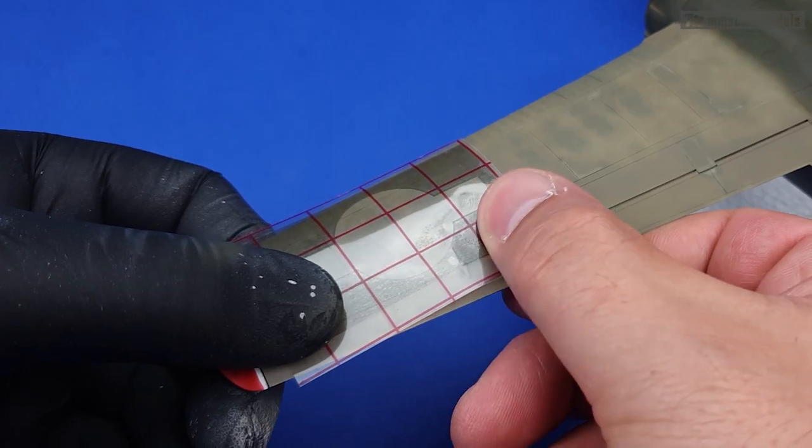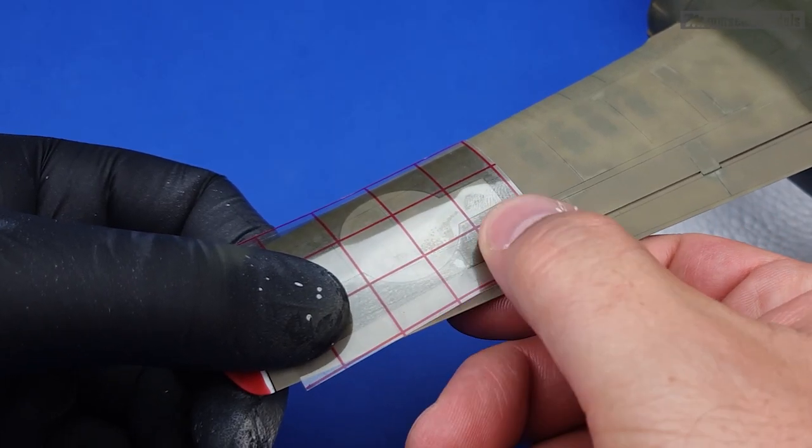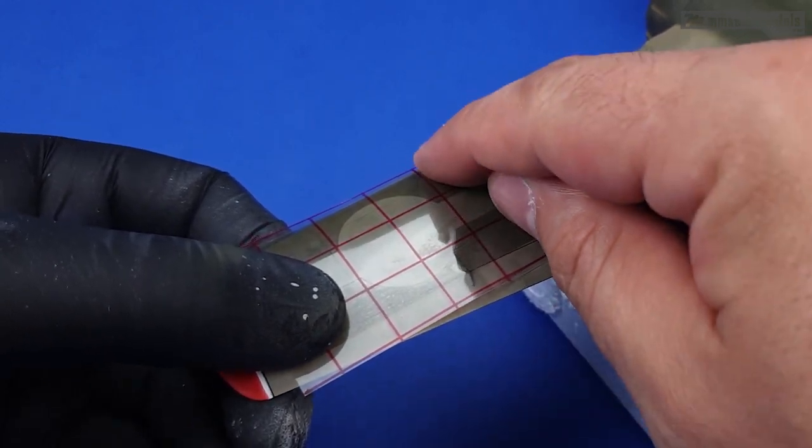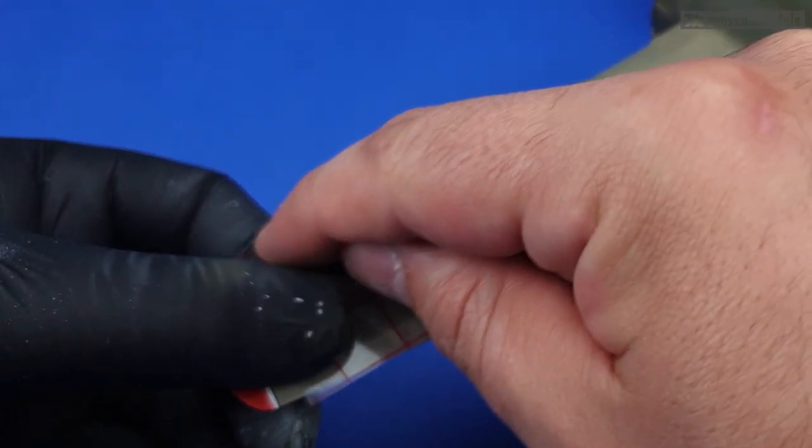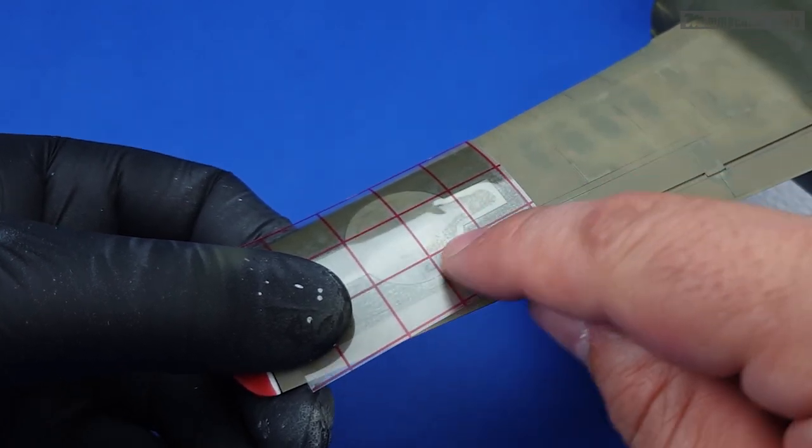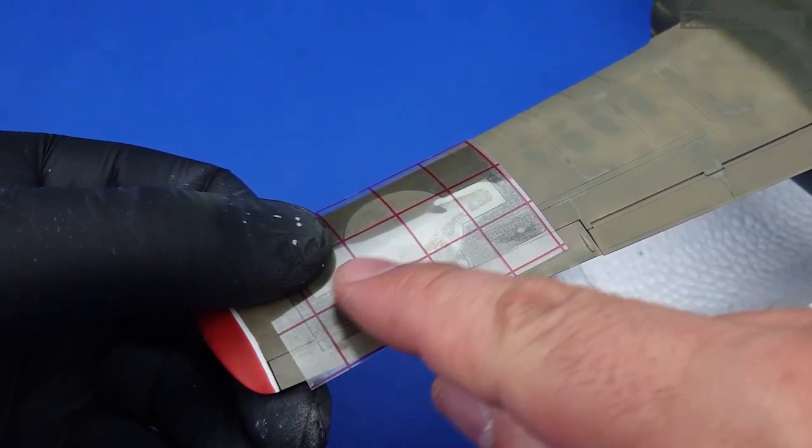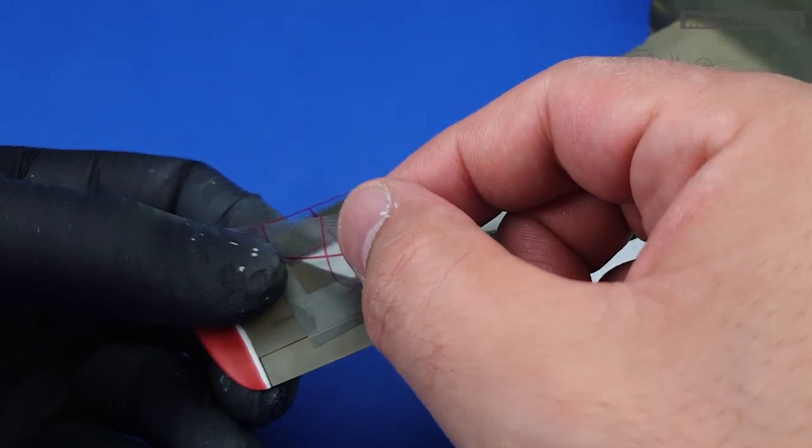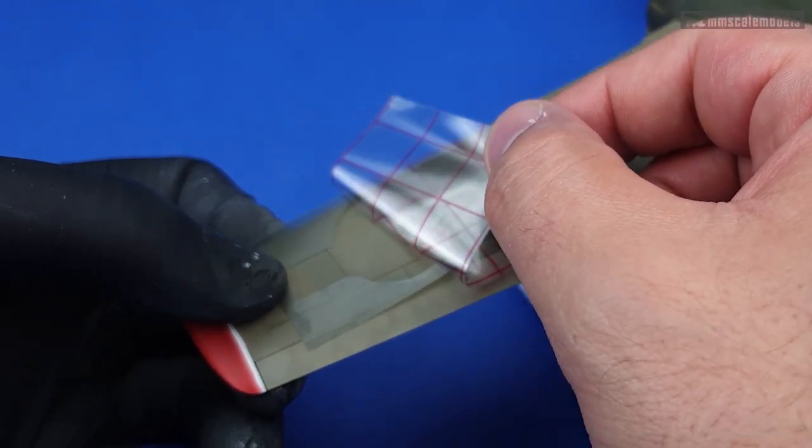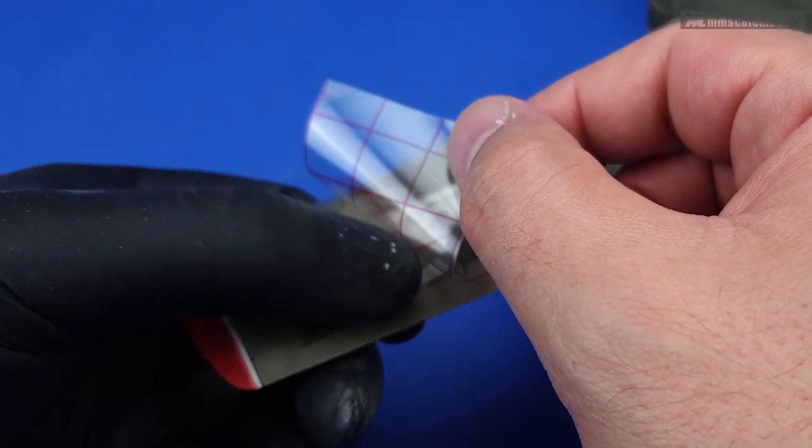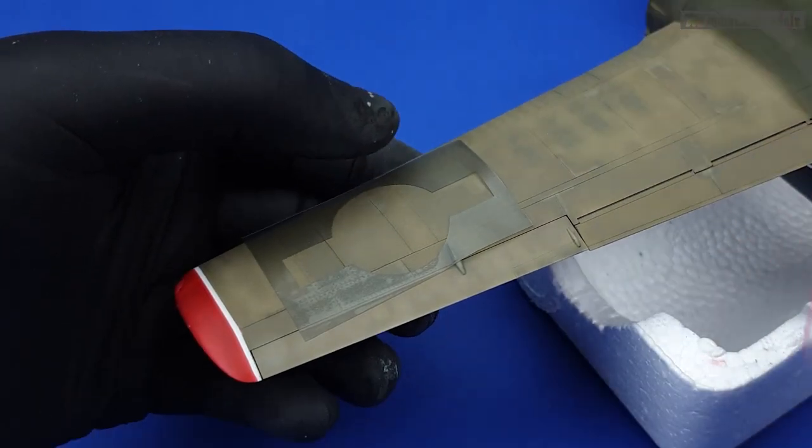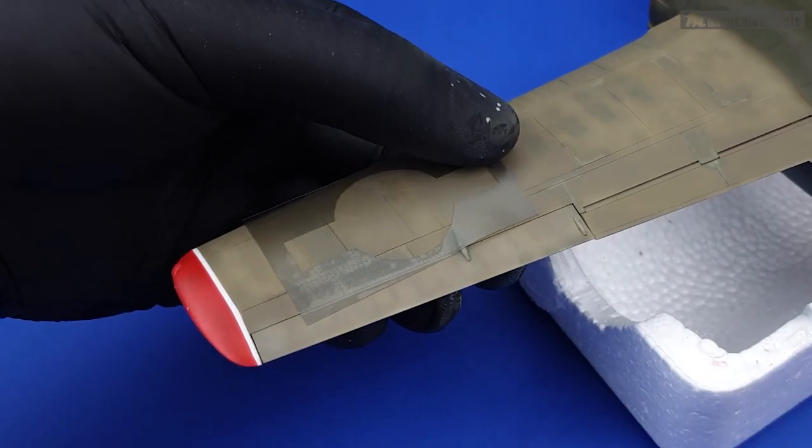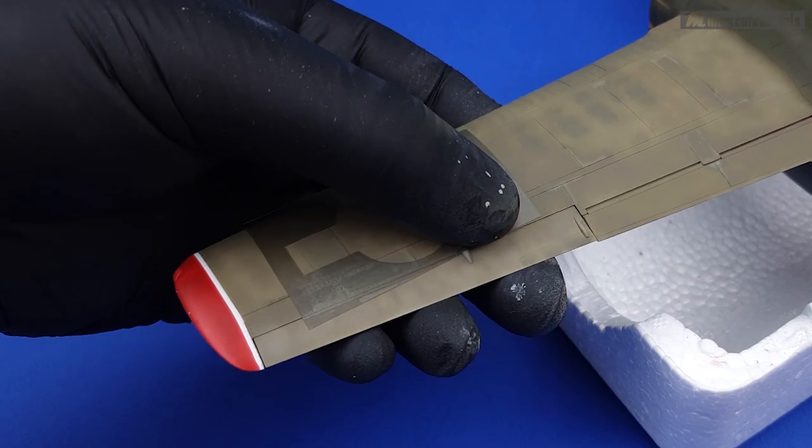I will try to position this as good as possible and then I'll burnish it down so that the mask can stick on the surface. I'll try to remove the carrier film without disturbing the mask too much. All right, this should be good.